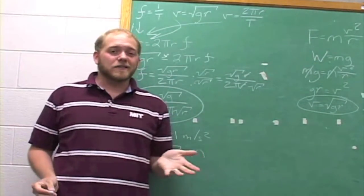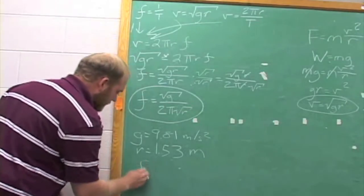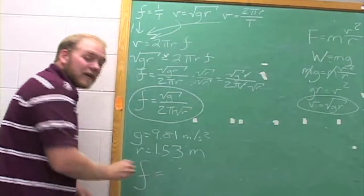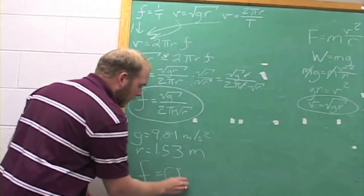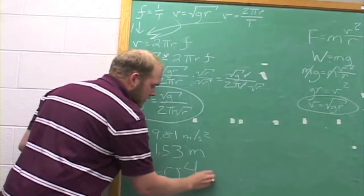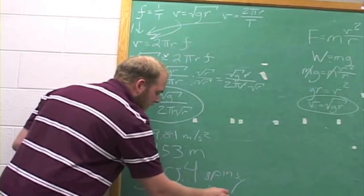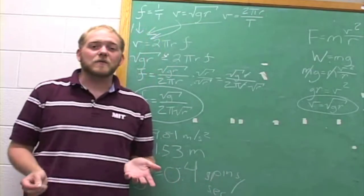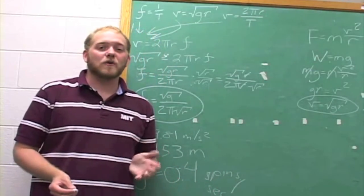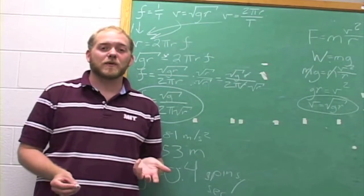Did you get the right answer? We find that the frequency is equal to 0.4 spins every second. This is equal to 24.2 RPMs, or revolutions per minute.